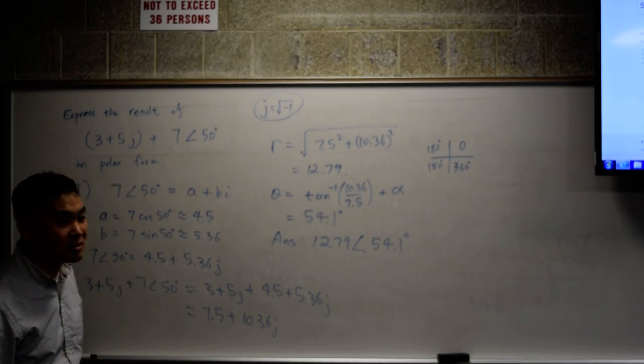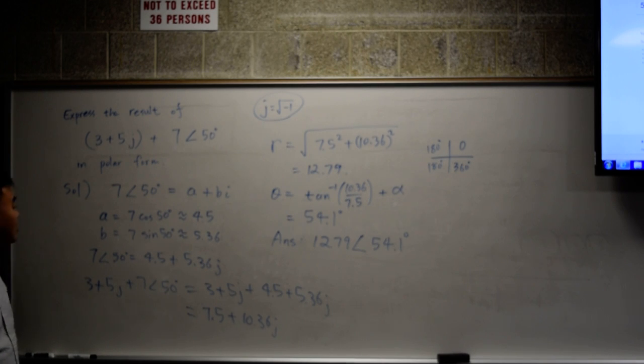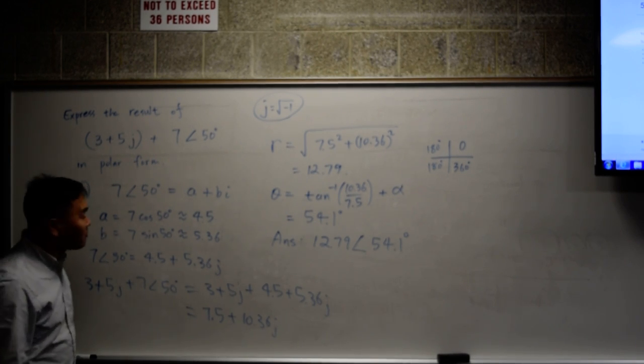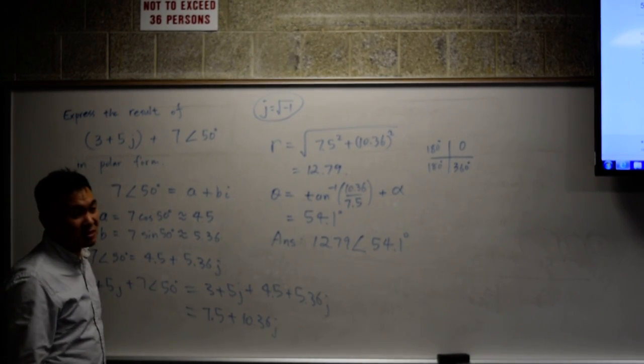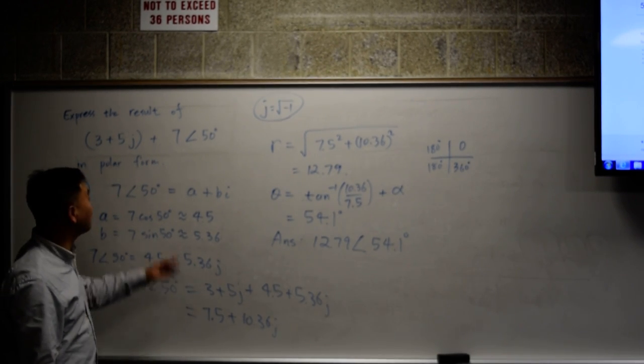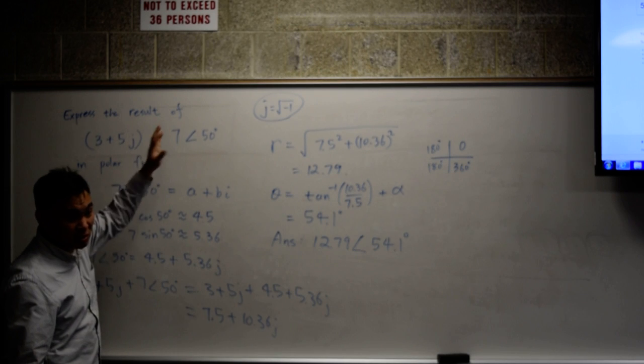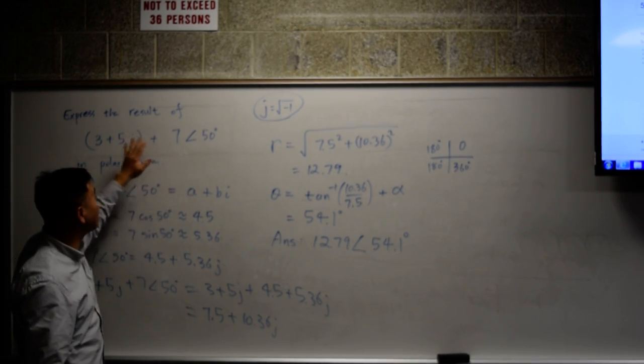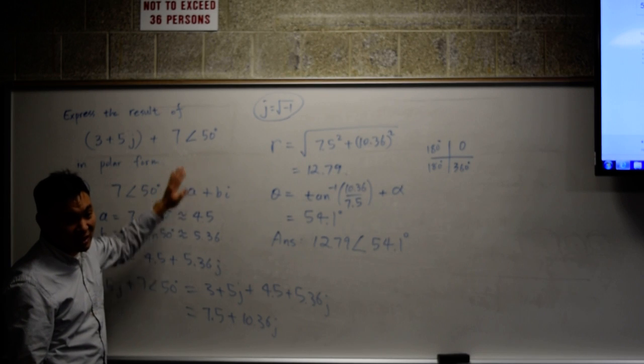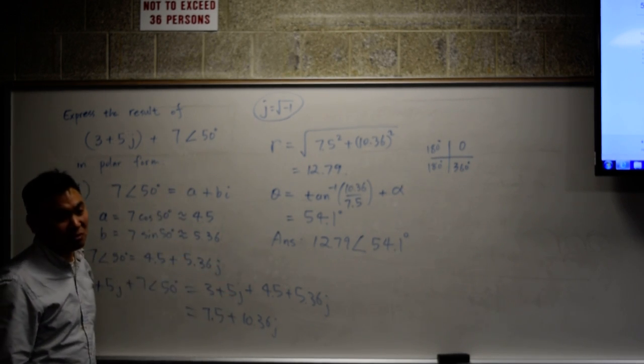Student asks: Couldn't you just take the polar form of 3 plus 5J and add that? The thing is, if they're both in polar form, the magnitudes don't add up. There is no formula when you have both as polar form. In fact, if they're both in polar form, you have to convert both of them into rectangular and then add and change it to polar form, unfortunately.